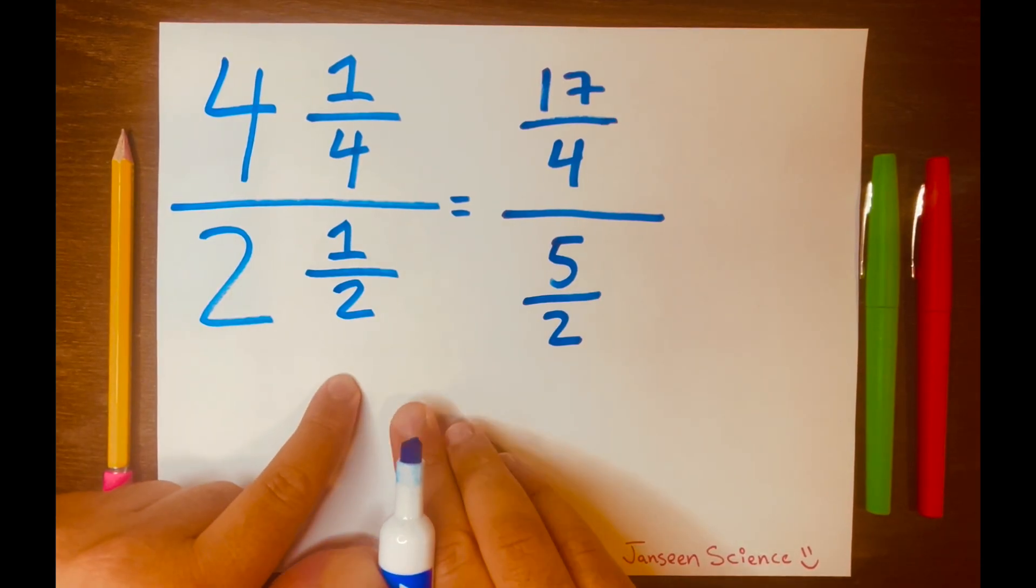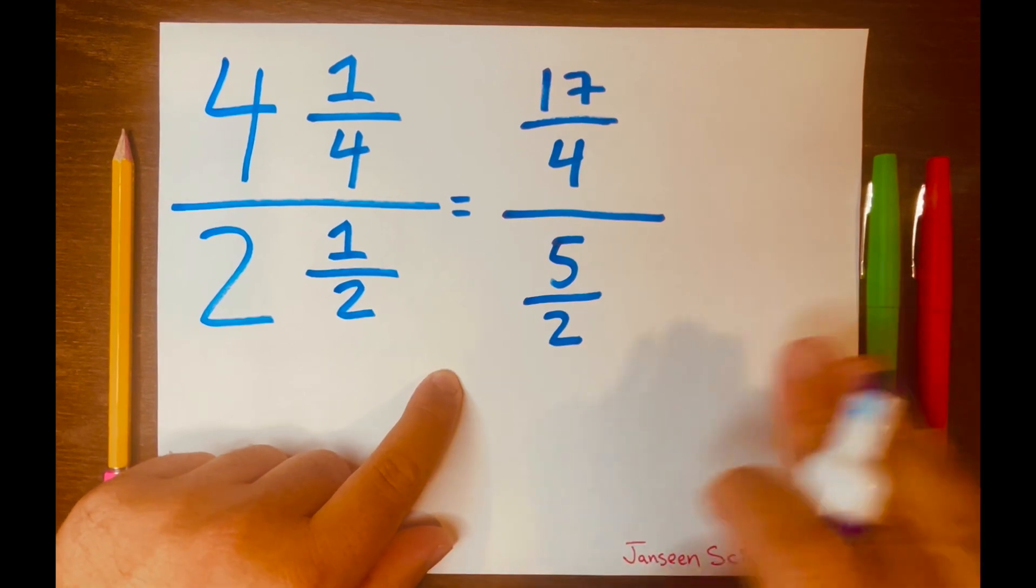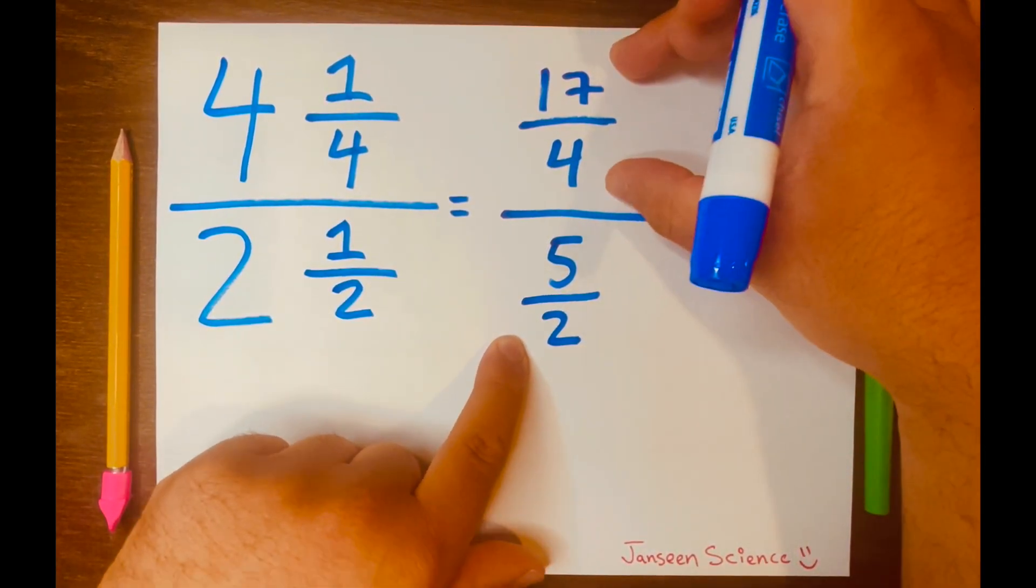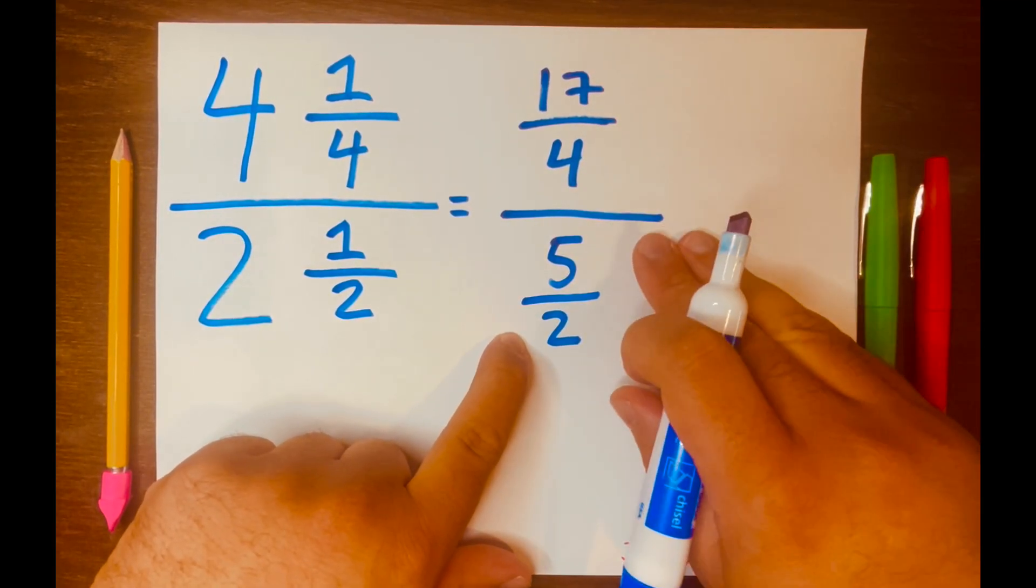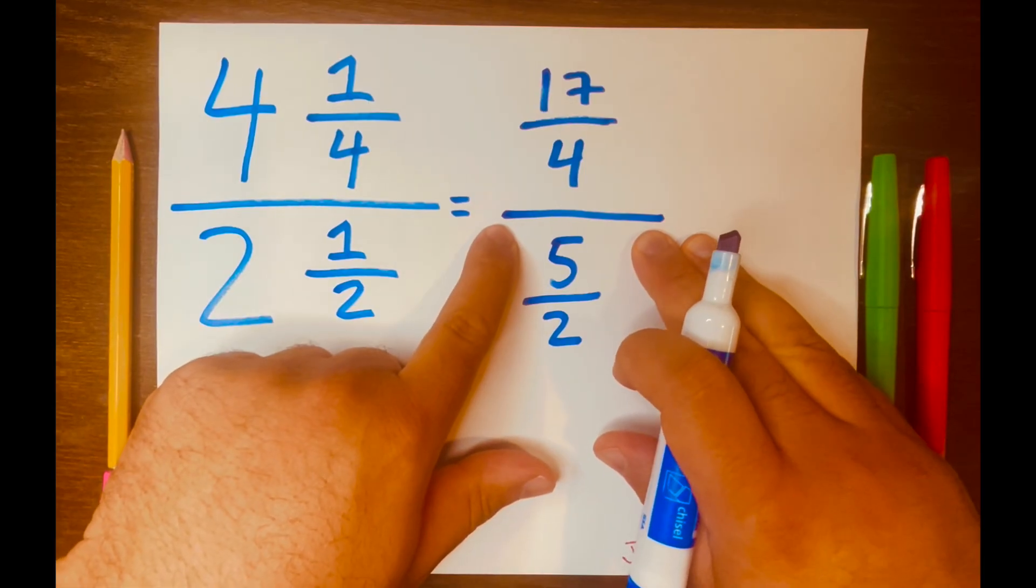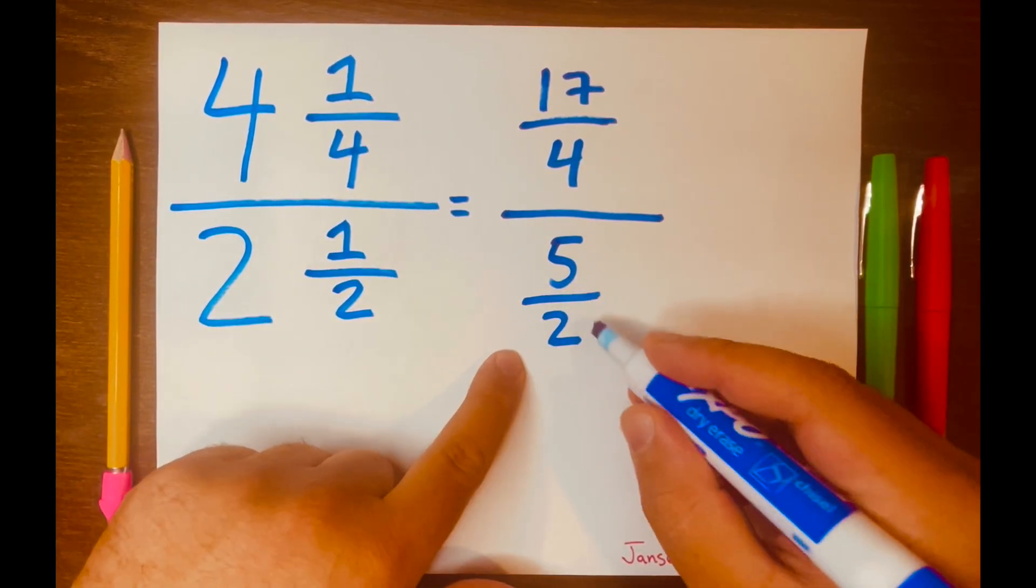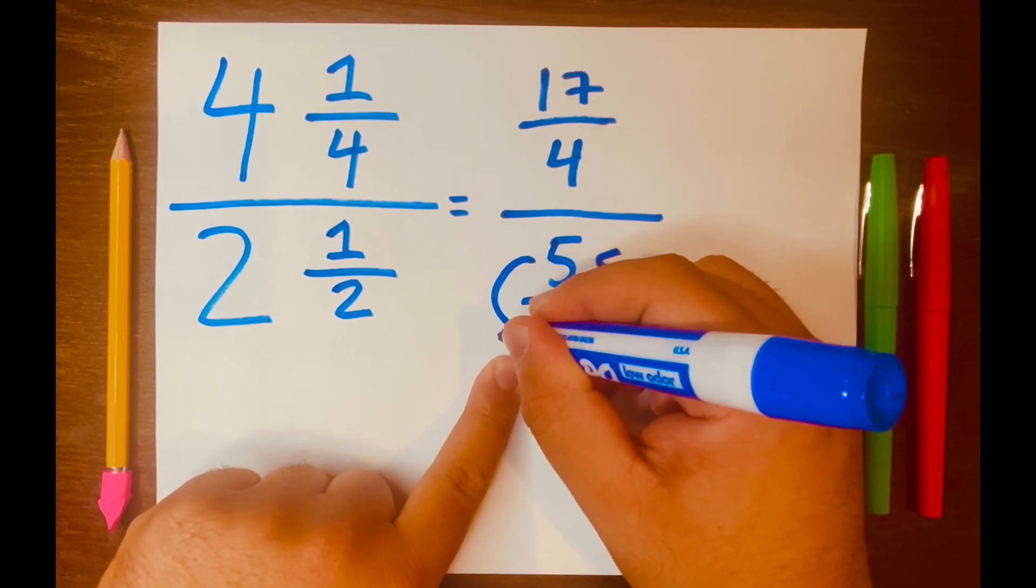Now, we're going to use this copy-change-flip method, or keep-change-flip method, with this problem. So we're going to keep this part, 17 over 4. Then we're going to change the division line to multiplication. And lastly, we're going to flip this fraction. So the 2 will go on top of the fraction, and the 5 will go at the bottom of the fraction.